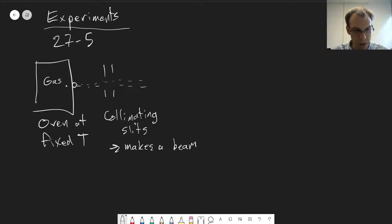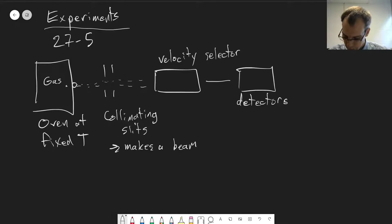And then the gas keeps going through here and hits a velocity selector. We'll look at what that actually looks like in just a minute. And then you have a detector on the other side to see if gas particles make it through. Just one detector. And all of this inside of a vacuum system.